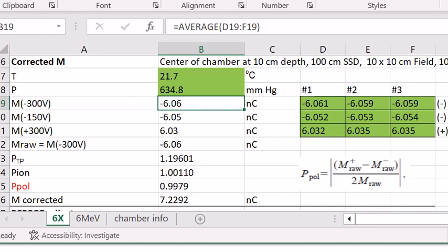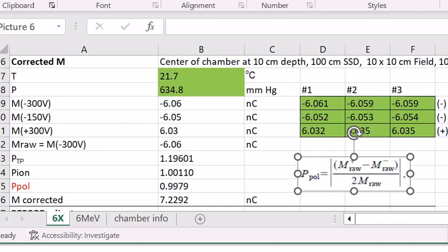Then we calculate the P-polarity using this equation right here. So that is the positive 6.03 minus the negative 6.06 divided by 2 multiplied by the mraw.